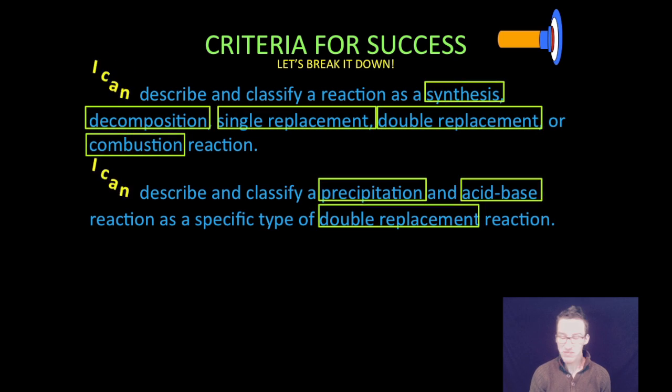And then to get even more nitty-gritty, we're going to describe and classify a precipitation and acid-base reaction as a specific type of that double replacement reaction. So there's a lot of different ways that we can classify a chemical reaction. And grouping these chemical reactions in this way will help us better understand what's going on in the chemical reaction itself.